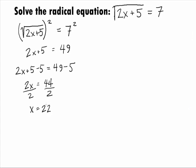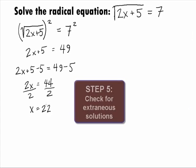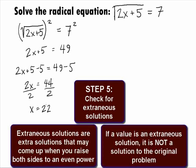Even though we found a value for x, we are not done yet. In Step 5, we want to check for extraneous solutions. When solving radical equations, extra solutions may come up when you raise both sides to an even power. These extra solutions are called extraneous solutions. If a value is an extraneous solution, it is not a solution to the original problem.